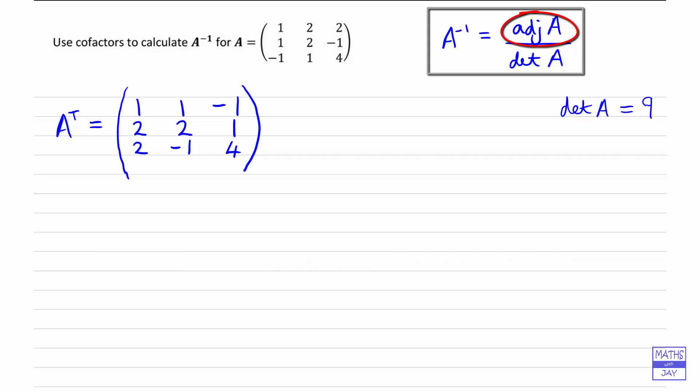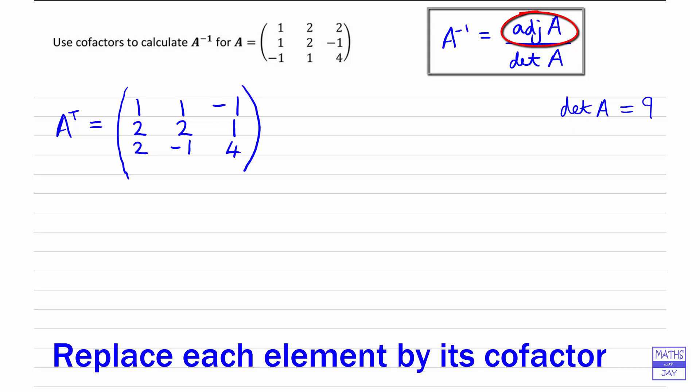So that's the transpose of our matrix. So that's the easy part of finding the adjugate. So the next stage is to work out what the cofactor is for each of the elements in the matrix. So we need plenty of space for this.